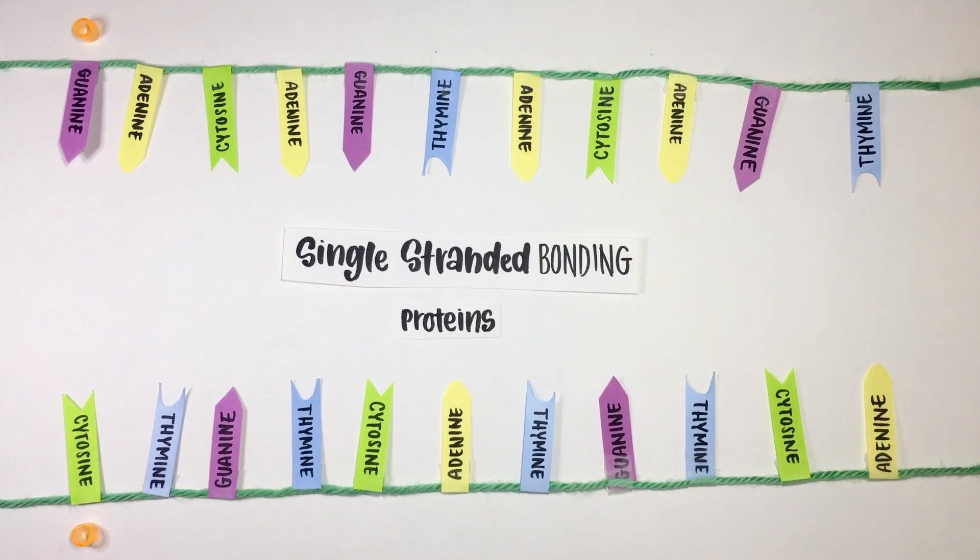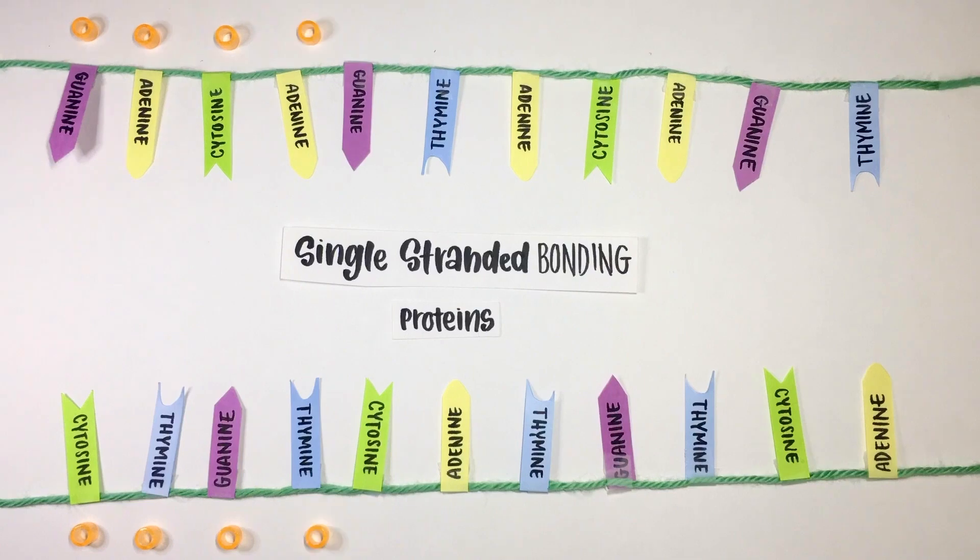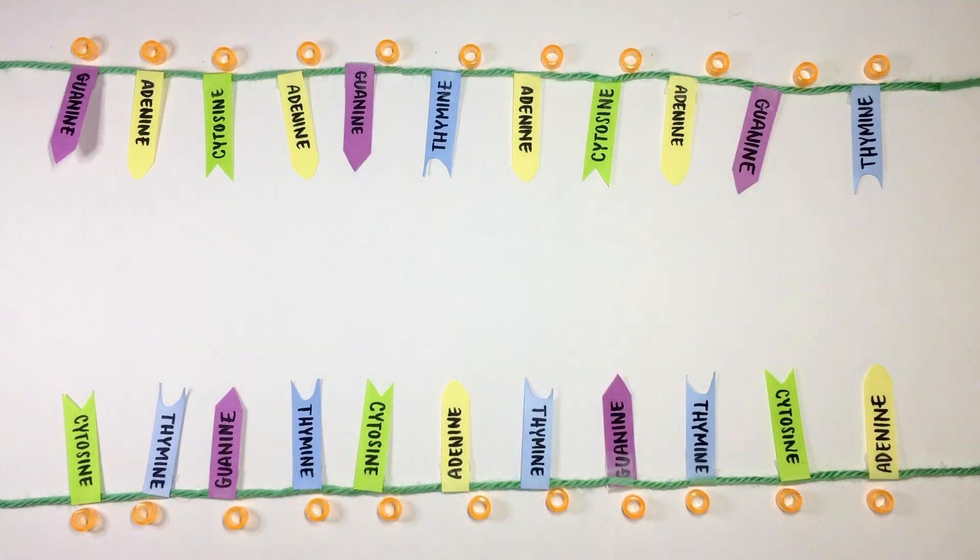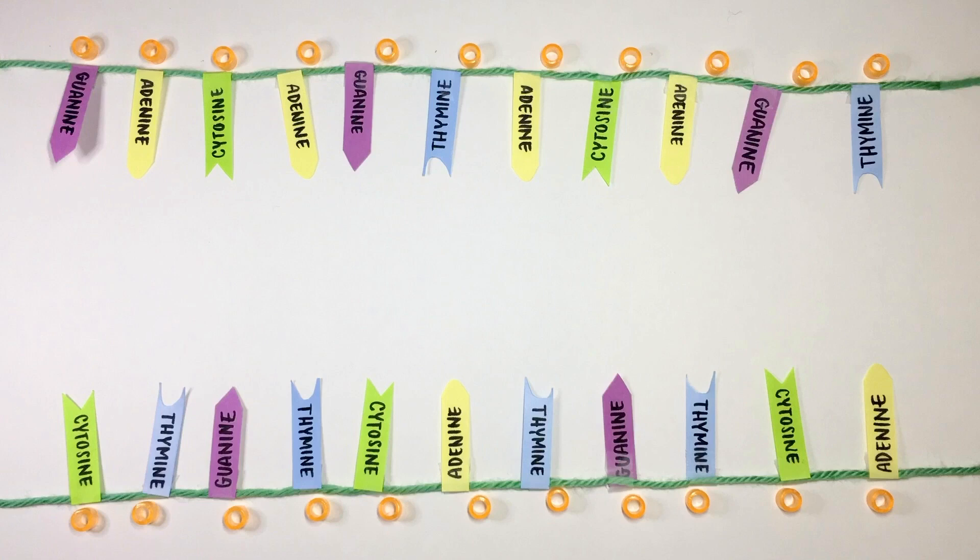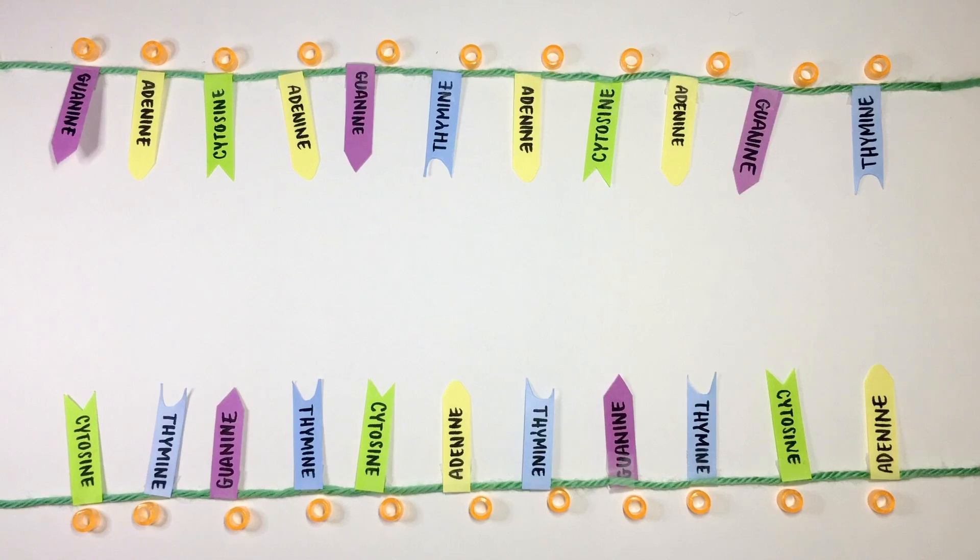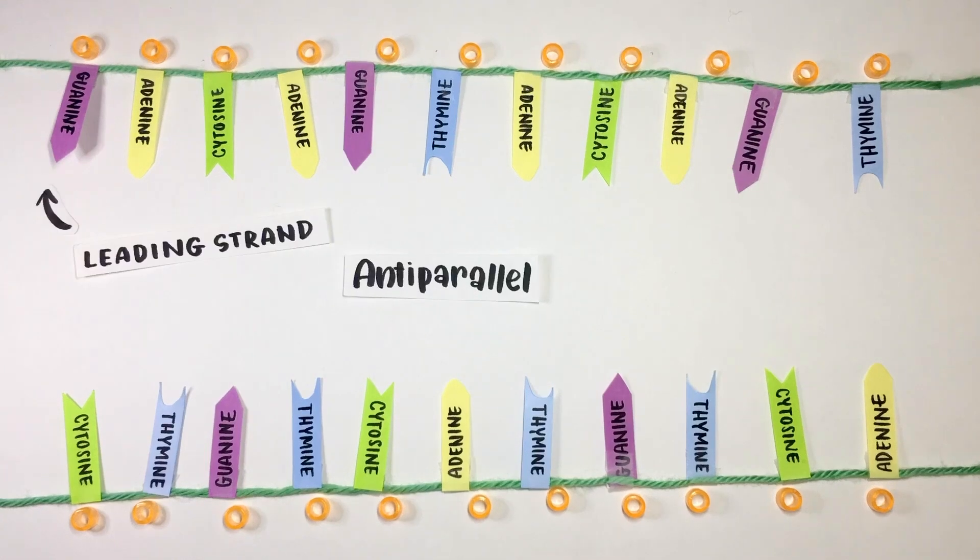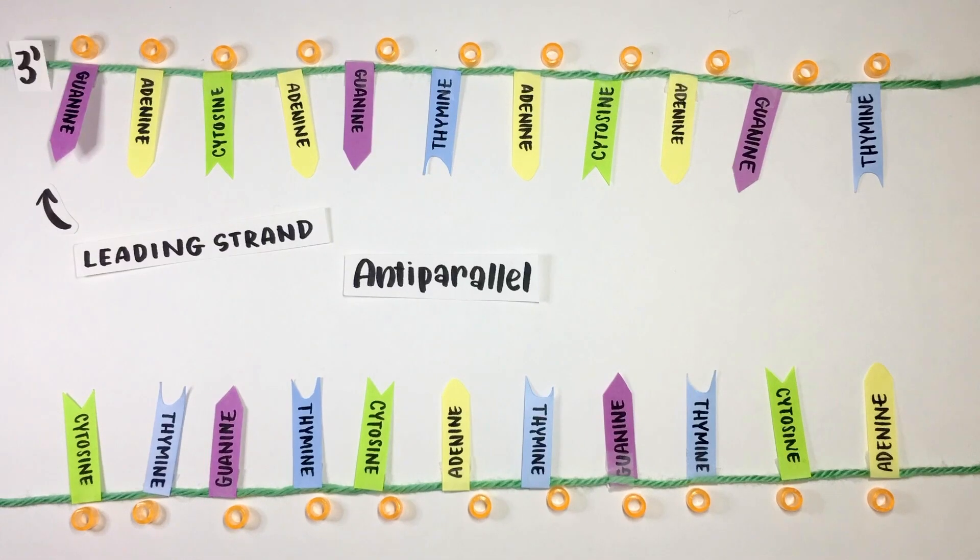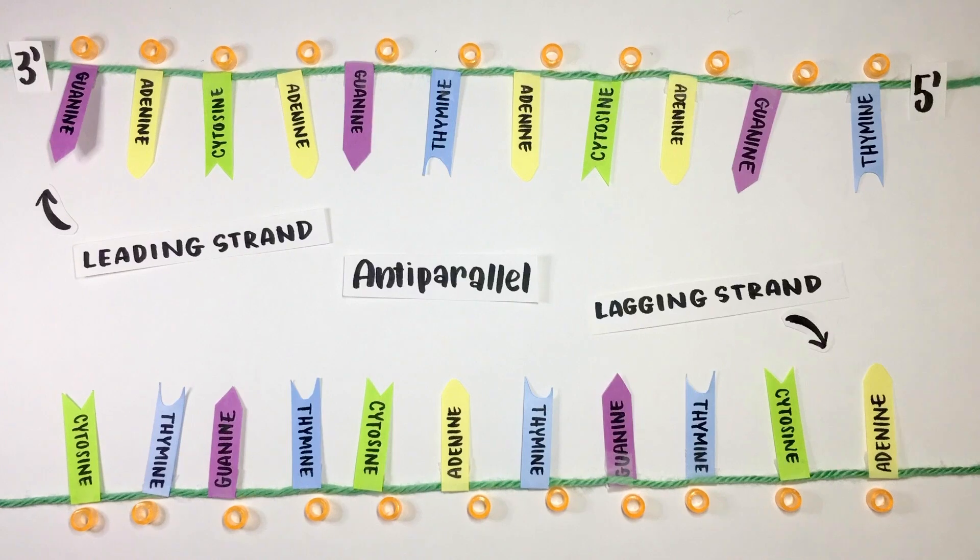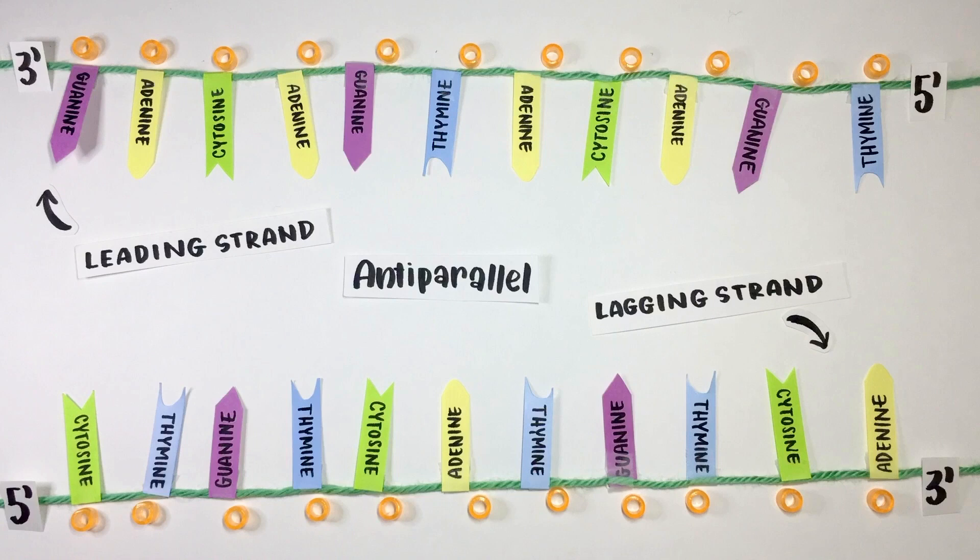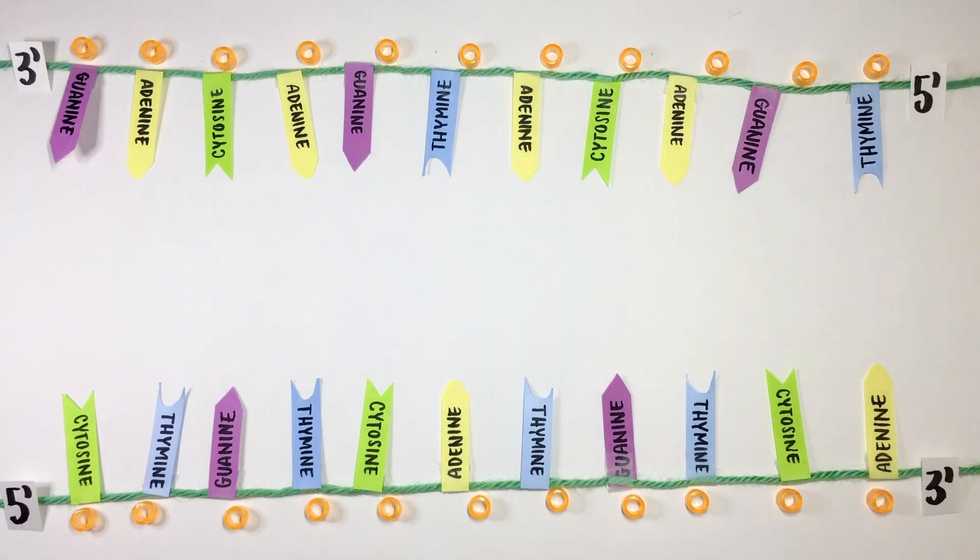Single-stranded bonding, or SSB proteins, bind to the separated DNA strands and keep them in place, preventing the hydrogen bonds from reconnecting. The two DNA strands are anti-parallel, meaning that the leading strand is going from the 3' to 5' direction, and the lagging strand is going from the 5' to 3' direction. This is significant in DNA replication because it allows complementary base pairing.